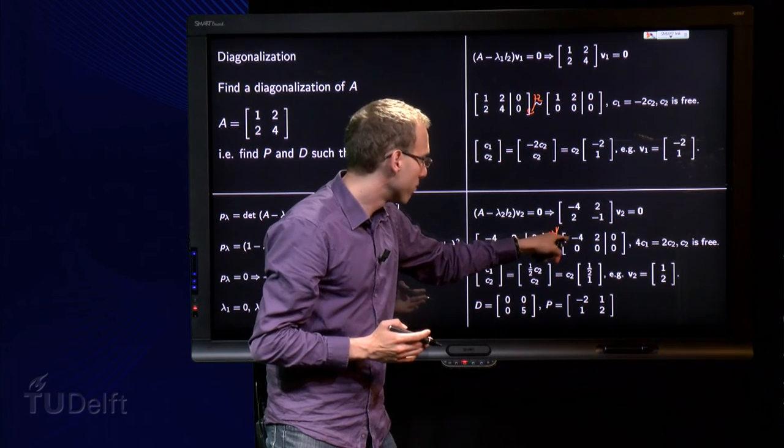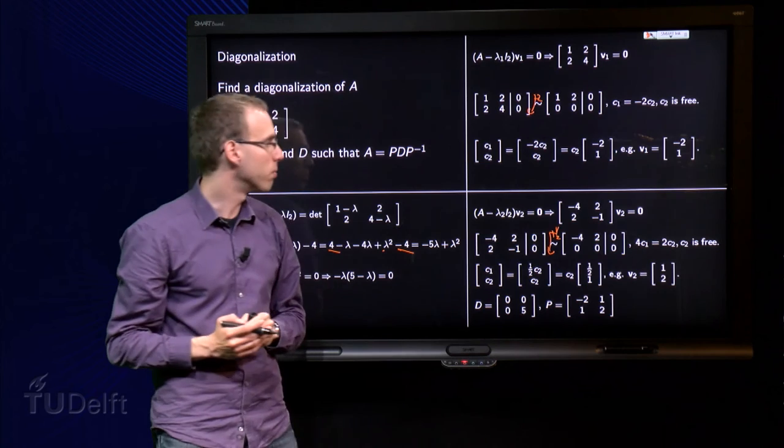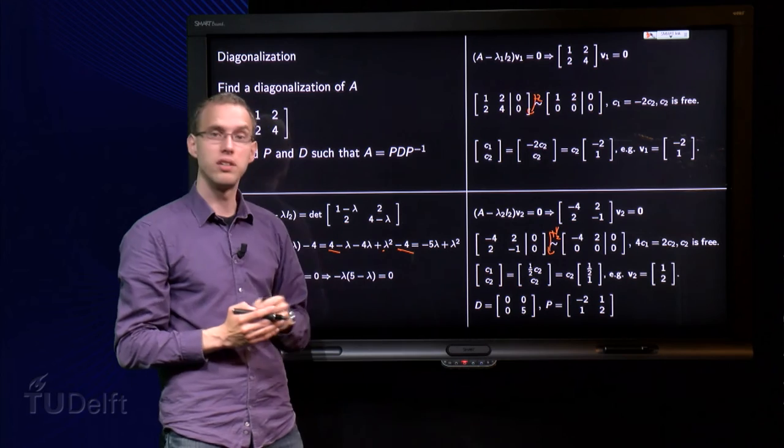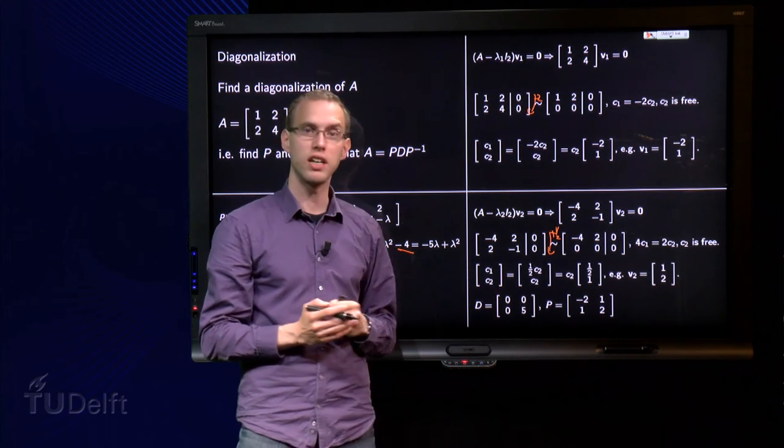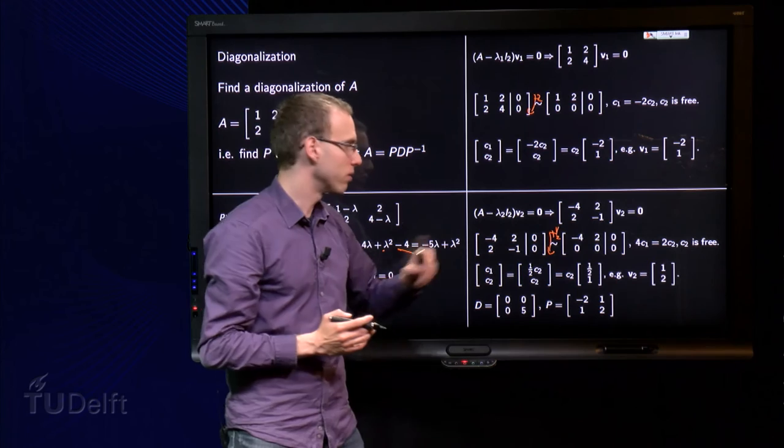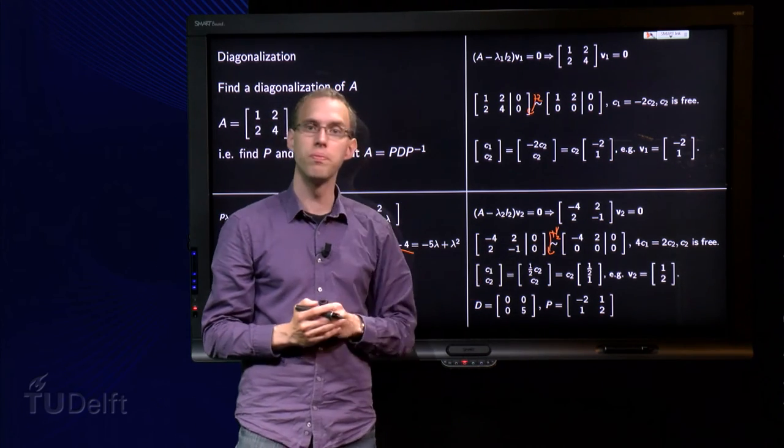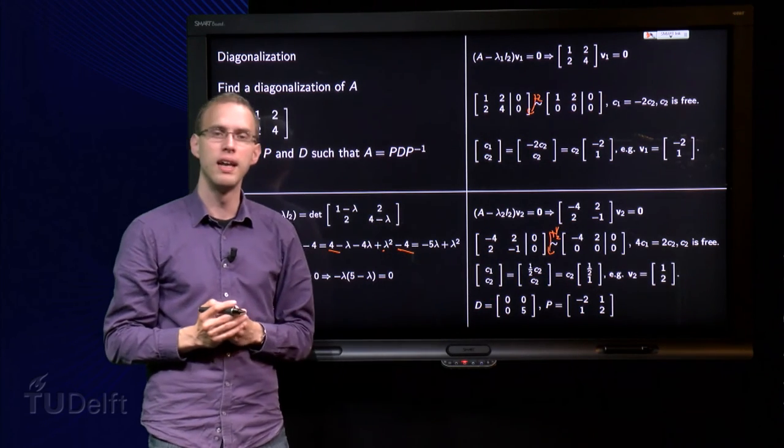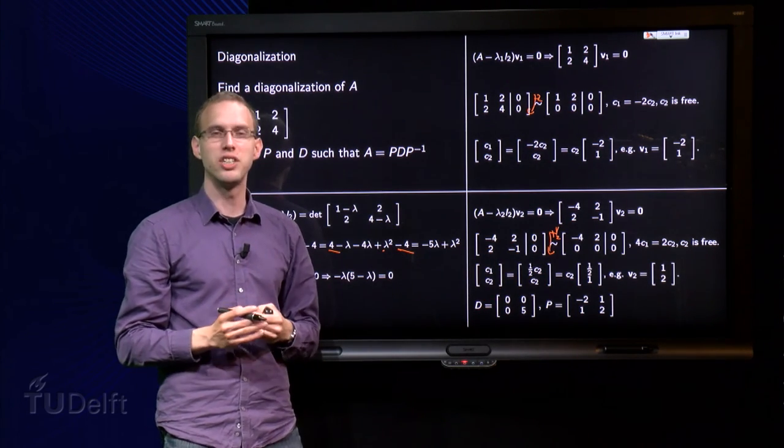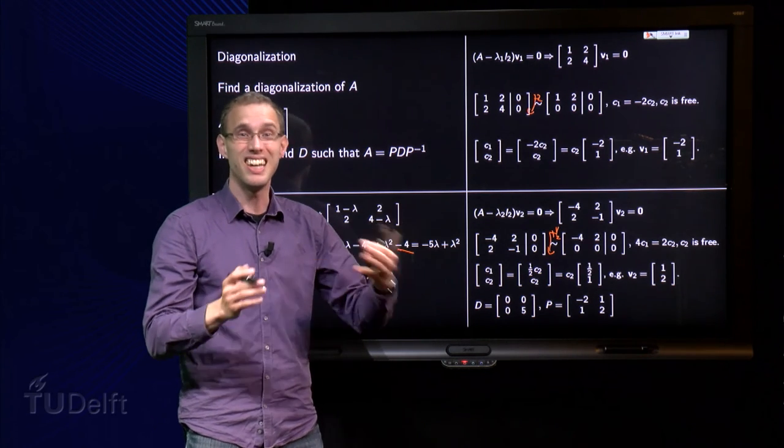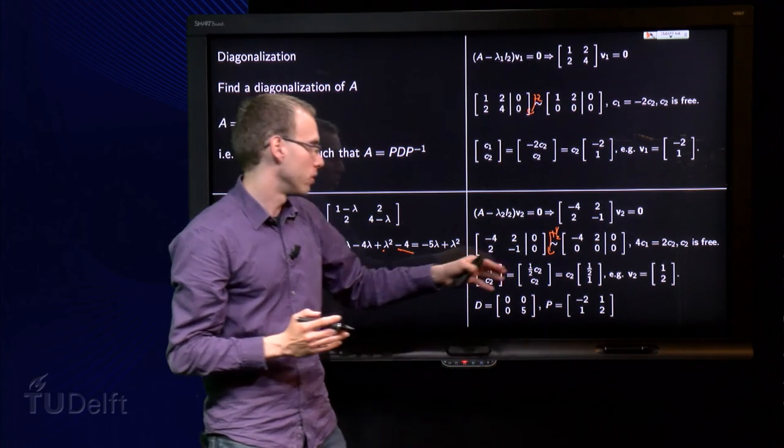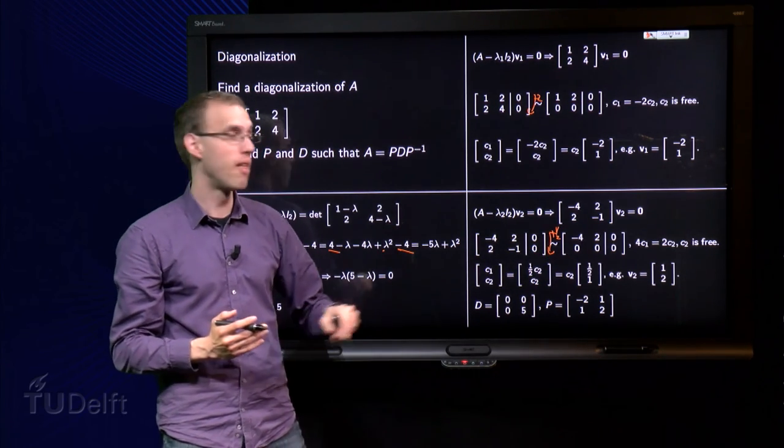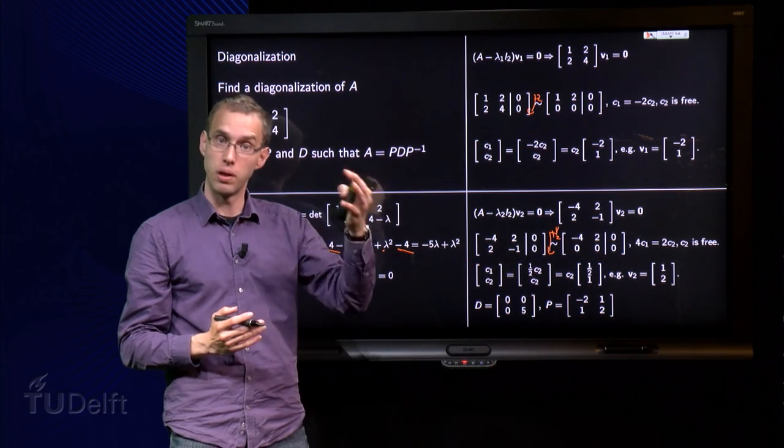And we know 4 times C1 plus 2 times C2 equals 2 times C2. Put it in parametric vector form, C2 in the second spot, and C1 equals 1 half C2, take out the C2, and the vectors V2 are of the form multiples of 1 half, 1. And I don't like fractions, so if I can choose C2, I would choose C2 equals 2, because then you get rid of the fraction over here. So, we have for example V2 equals 1, 2.